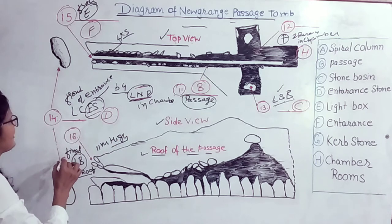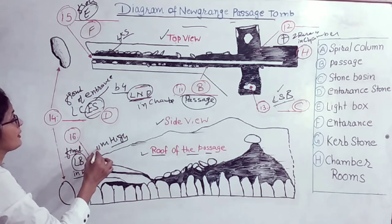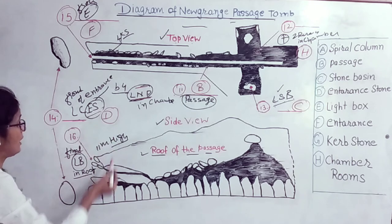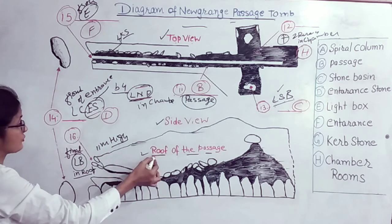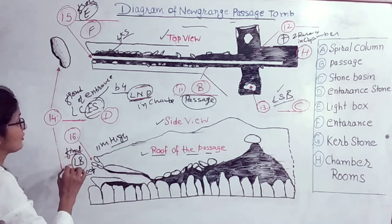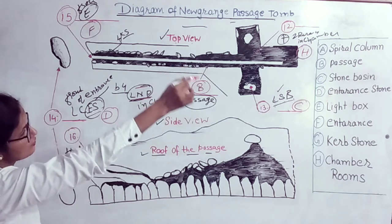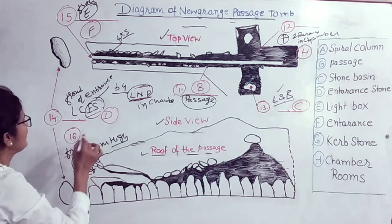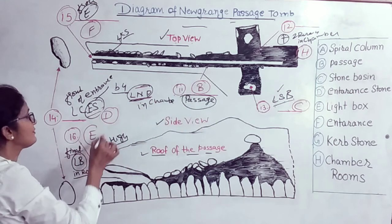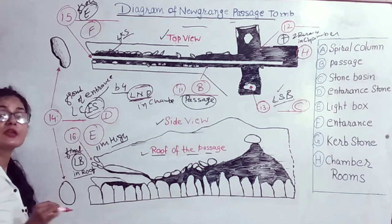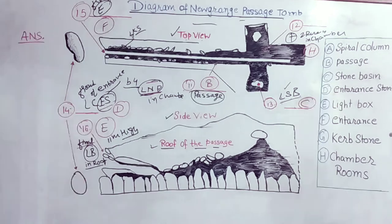For question 16, the speaker mentioned the roof and the light box — the answer is E. So in this manner we can work out all the answers: 11B, 12H, 13C, 14D, 15F, and 16E.